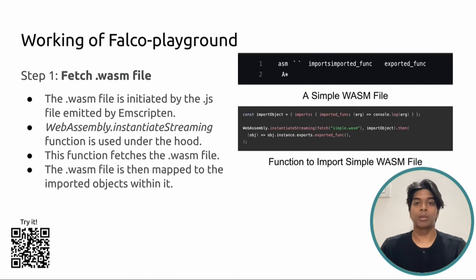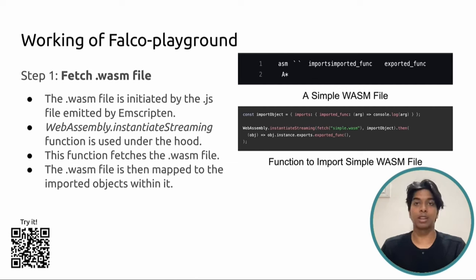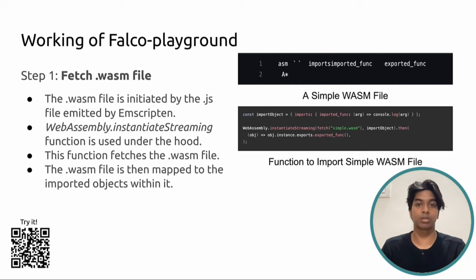Emscripten emits a JavaScript file and a Wasm file after a successful compilation of C++ code into WebAssembly. The JavaScript file contains information about the Wasm file — its location and exported functions — and information on how to instantiate the Wasm module in the browser. During this process, exported functions in the Wasm module are mapped to individual JavaScript functions referenceable by Falco Playground. In almost all cases, the built-in function instantiate streaming can be used to fetch the Wasm module.